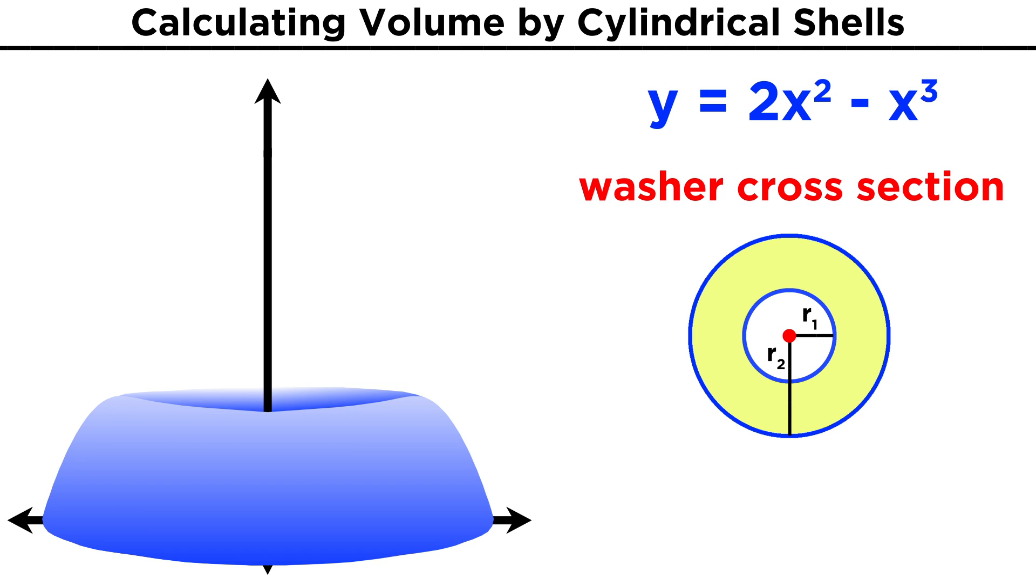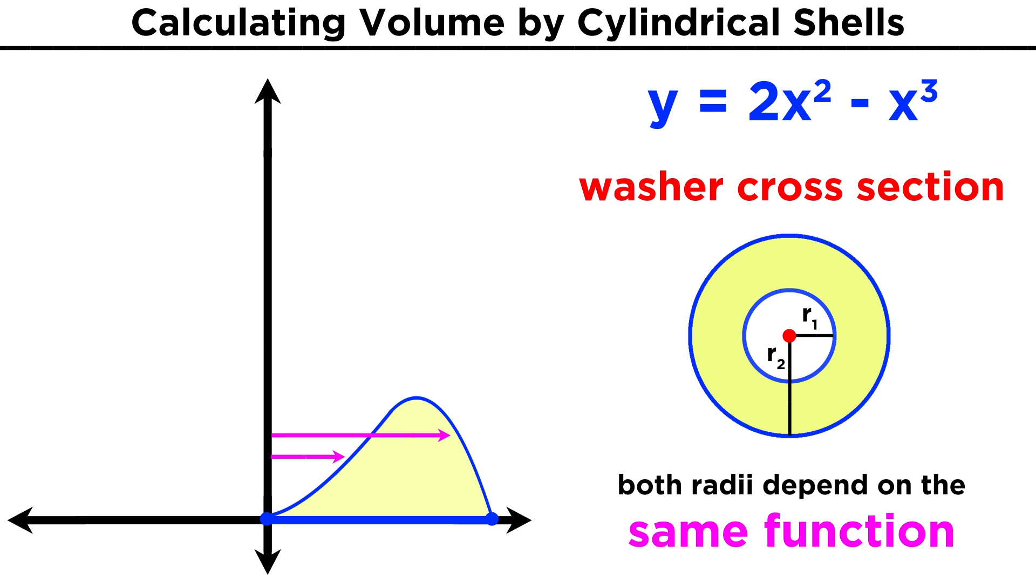With the other examples, that ended up being no problem, and we were able to get expressions for the inner and outer radii of the washer that we could integrate. Here it's not so easy. Rather than one function per radius, here both the radii depend on this same function, and furthermore, solving this function for x in terms of y is not a very appealing task.